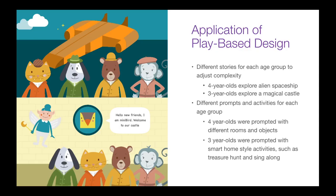We also adapted the prompts for each age group. The four-year-olds were prompted to explore ideas for different rooms in the spaceship, which represented typical rooms in a home, and we prompted them to explore ideas for three objects in particular. With the three-year-olds, we experimented with smart home-style activities such as conducting a treasure hunt by having them search for an item with the help of the voice agent, or singing songs along with the voice agent.